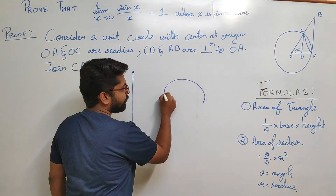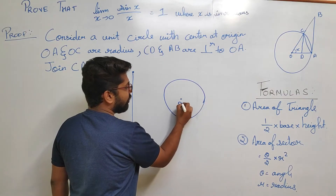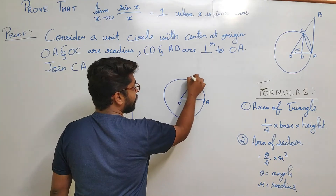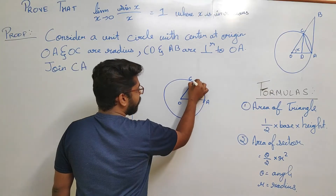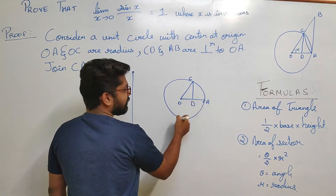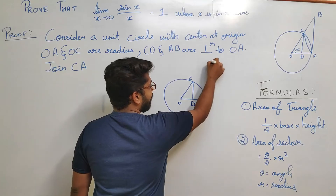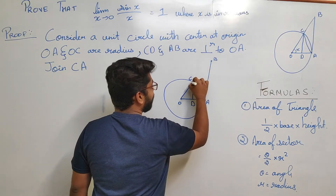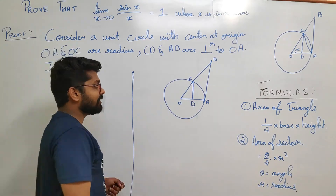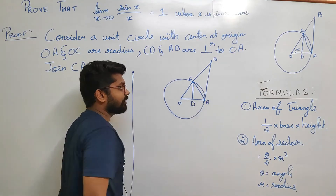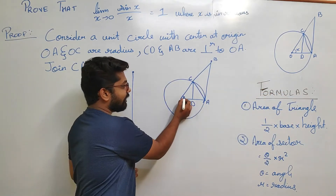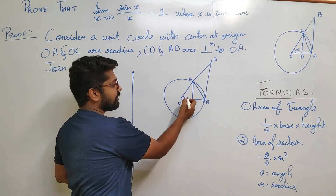We consider a unit circle with center O and first radius OA. We then consider a second radius OC and drop a perpendicular from point C to radius OA, meeting it at point D. Next, extend line OA so that it reaches point B, then join CB. Additional construction: join AC. The angle between the two radii OA and OC is x.